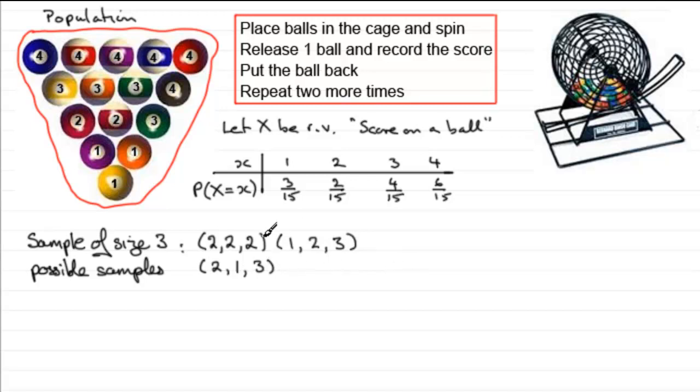For something like this, if you wanted to see how many different samples we could get, then for the first value, there will be four different balls that could come out, four different scores, that is. And there'll be four for this one, and there'll be four for this one. In other words, the number of different samples that we could get would be four by four by four. Four fours are 16, 16 fours are 64. So, there's no way that I've got room to, or time, in fact, just to list them all out.